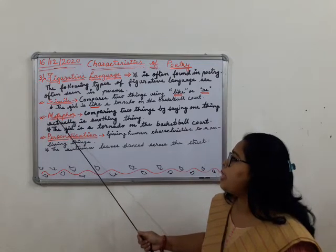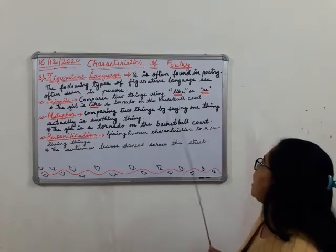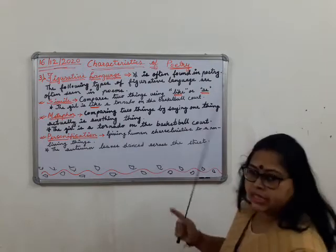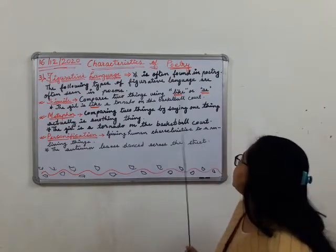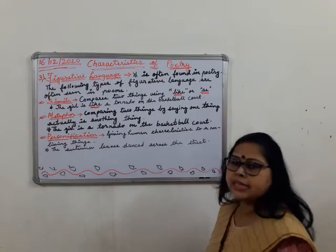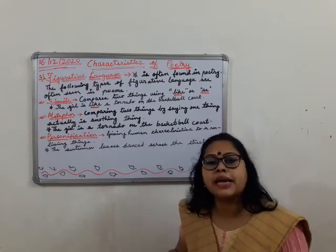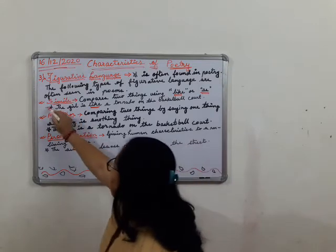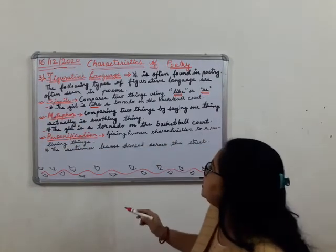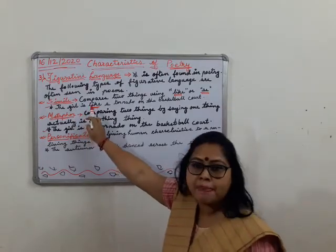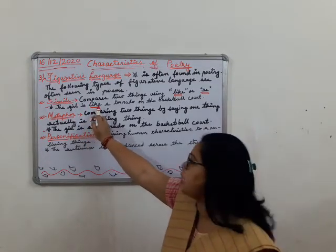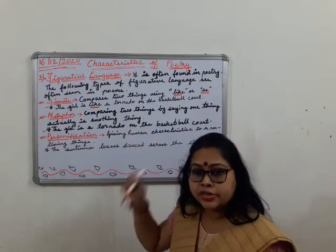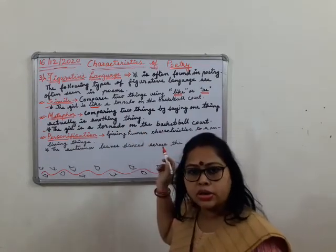Now the second type is metaphor. Metaphor is comparing two things by saying one thing actually is another thing. For example: 'The girl is a tornado on the basketball court.' Notice this line and the simile line are almost the same, except that in metaphor you do not see 'like' or 'as.' The girl simply is a tornado — meaning she really is described as a tornado on the basketball court.